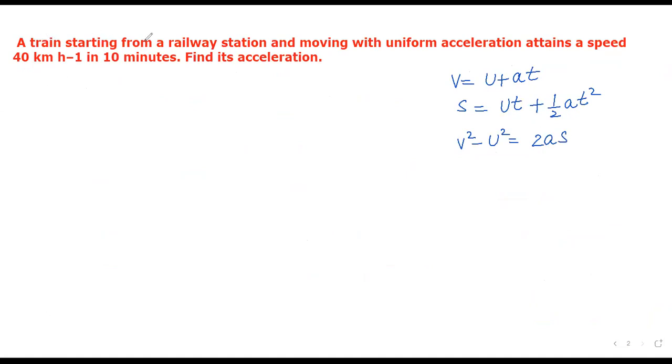Second question: A train starting from a railway station and moving with uniform acceleration attains a speed of 40 km/h in 10 minutes. Find its acceleration.